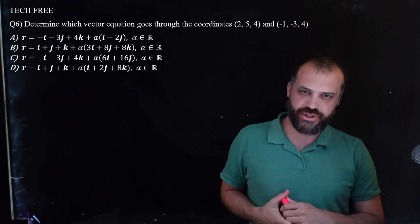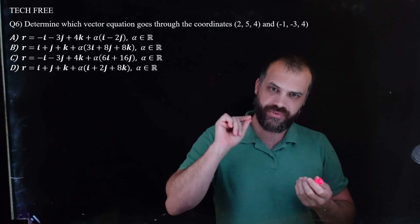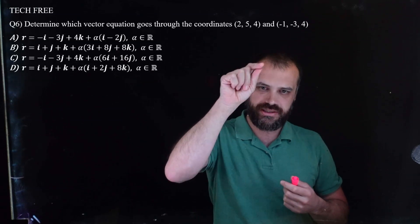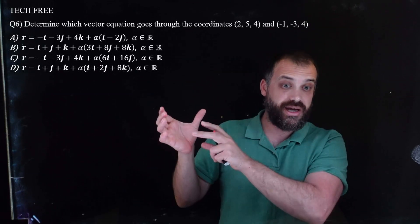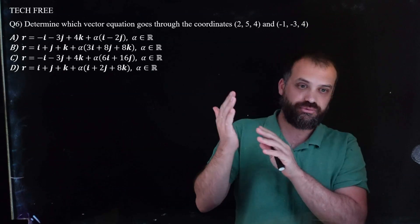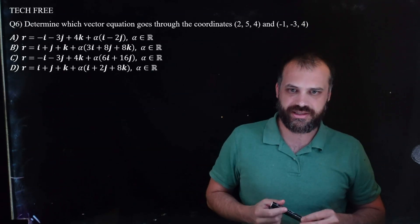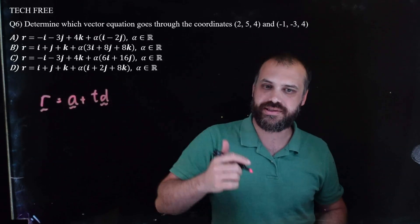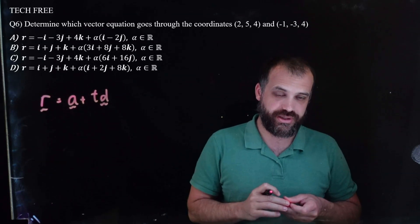Alright, some sort of vector equation here. Have a try. Alright, I'm going to have a go at this. Now, these questions can be tricky because just because you're given two points doesn't mean that one of those points is going to be the starting position or the direction is going to be just as simple as subtracting one from the other. But hopefully it is. So let's use that as our starting point.